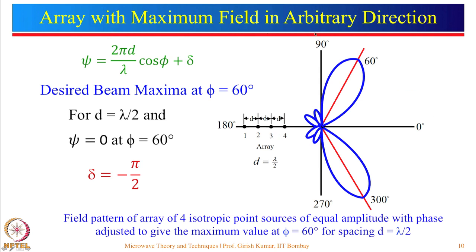Now let us consider an array with maximum field in an arbitrary direction. Suppose we want the desired beam along φ = 60°. For d = λ/2, we put ψ = 0 at φ = 60° and solve for δ, which gives δ = −π/2. With phase progression 0, −π/2, −π, −3π/2, we get a beam in that direction. Simply by changing the phase difference between elements, we can scan the beam — this is the principle of the phased array antenna.